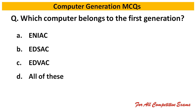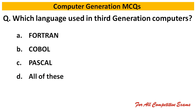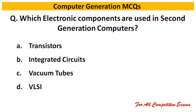Next question: Which computers belong to the first generation? Right answer is option D: All of these. Next question: Which language was used in third generation computers? Right answer is option D: All of these. Next question: Which electronic components are used in second generation computers? Right answer is transistor.